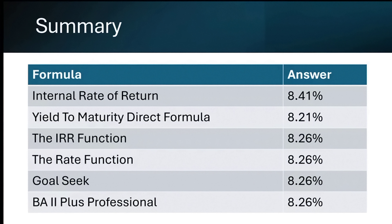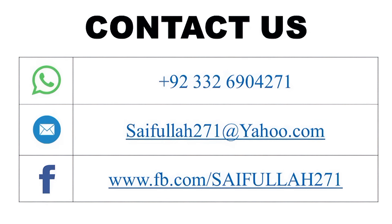We can observe minor differences with the direct YTM formula, but a larger difference with the IRR interpolation formula. As discussed, the gap between IL and IH is the basic cause of this difference — keeping a minimum gap between IL and IH brings the answer closer to 8.26%. In this way, we can find yield to maturity using different formulas and tools. If you have any questions related to finance and financial modeling, feel free to contact us. Thank you, take care.